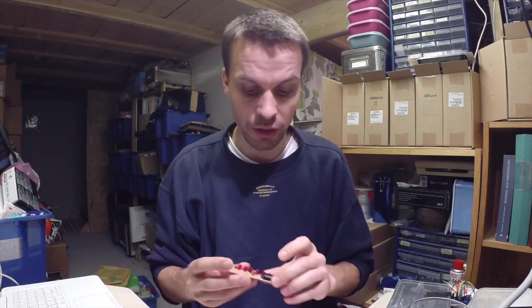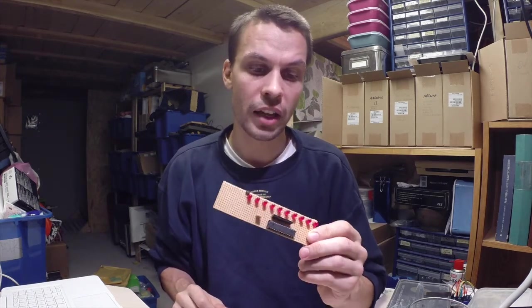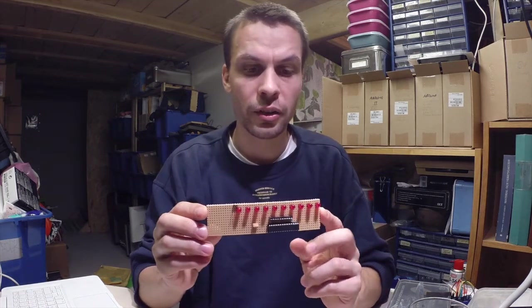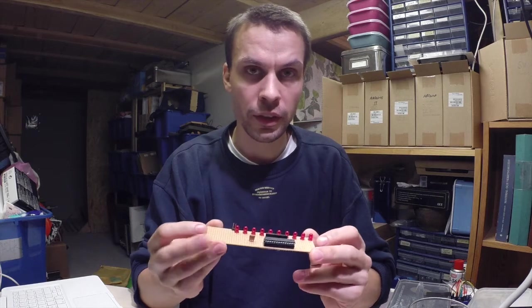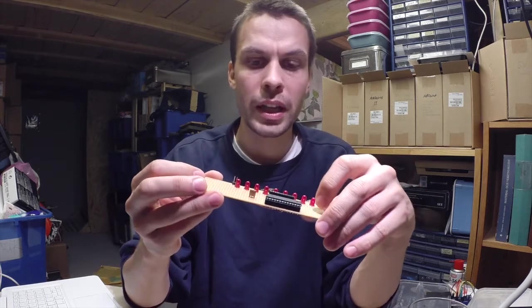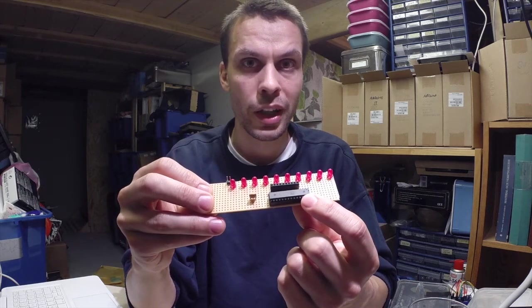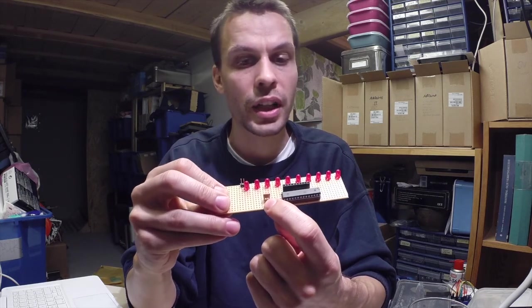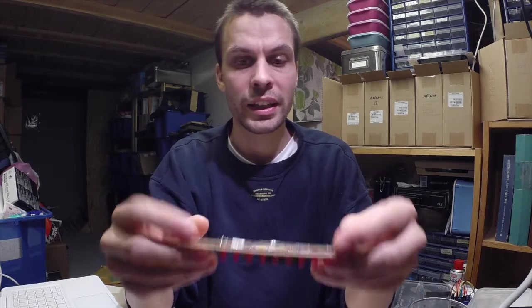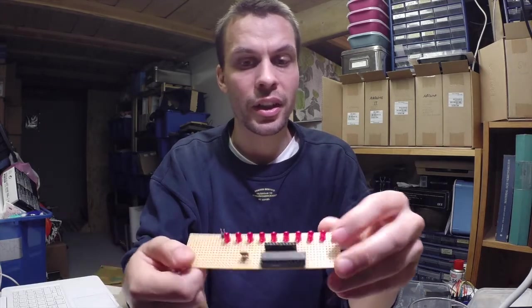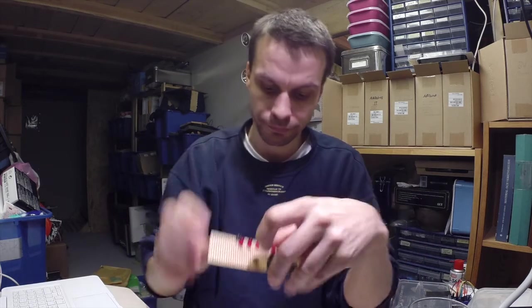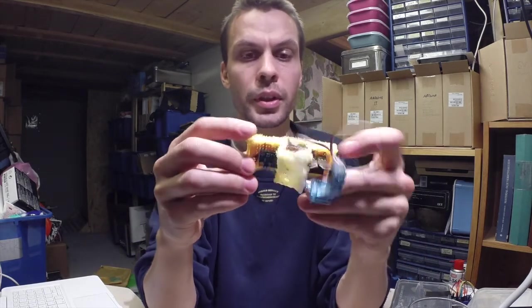I'll just quickly show you - I have two projects here. The Arduino Cylon scanner or Larson scanner - there's an old tutorial I made. It's made like this: you have the ATmega328, you have the resonator, and then some LEDs. There's nothing else, it's just power in there.